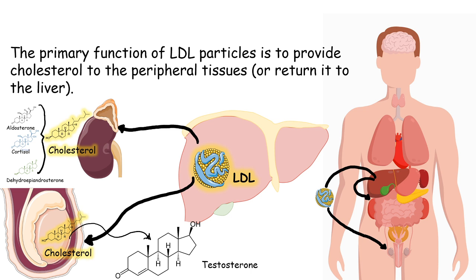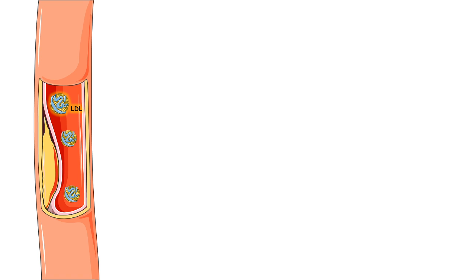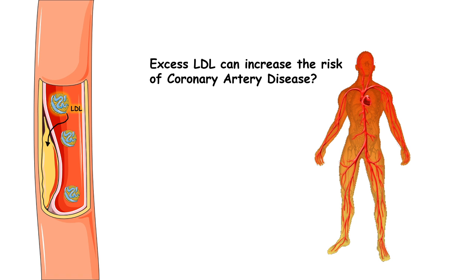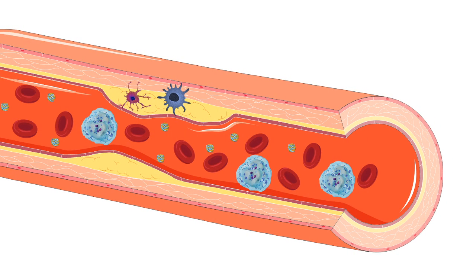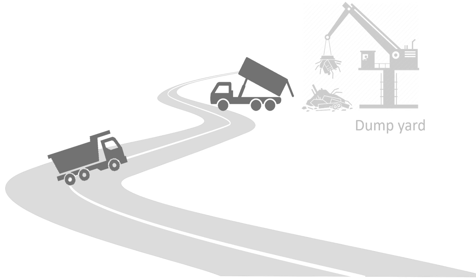The cholesterol deposited by LDL in the adrenal cortex is used to generate steroid hormones, and in the testes it is used to generate testosterone. So LDL transports cholesterol and is absolutely necessary for the body. However, there is a harmful side: LDL can deposit too much cholesterol in artery walls, which narrows the space of arteries and increases the risk of coronary artery disease. This situation also triggers inflammation as macrophages and dendritic cells secrete inflammatory cytokines in that region.